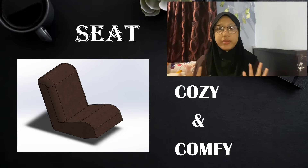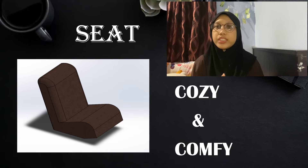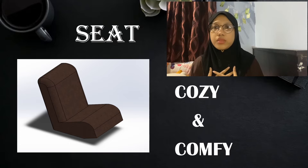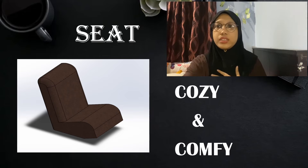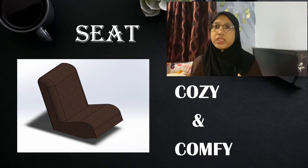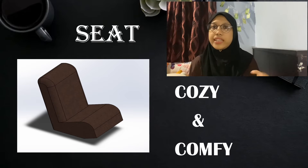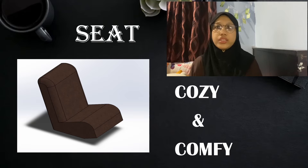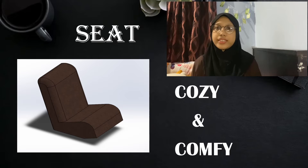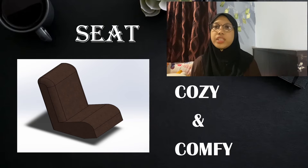Hi, my name is No Party binti Zaymi and my matrix number is J200568. Today I'm going to talk about my part — the seat. For the first step to draw the seat, I sketch the line in SolidWorks and then choose smart dimension to set the size. Next, choose the feature to extrude the sketch. Then at the bottom of the seat, draw a circle and choose extrude again. Lastly, it becomes the seat.